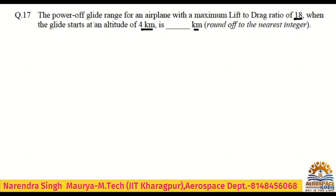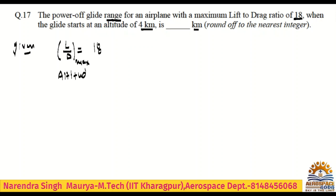This is a glider problem and they are asking for range. First we will write the given data: lift-to-drag ratio at maximum value is 18. Then altitude, which we can call h, is 4 kilometers. What we need to calculate is range — that is the fill-in-the-blank in kilometers.